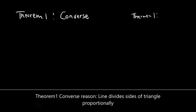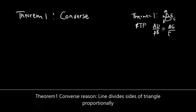Remember that in Theorem 1 we were given all the points of a triangle — A, B, C, D, and E — and we were required to prove that AD over DB is equal to AE over EC. That was Theorem 1.